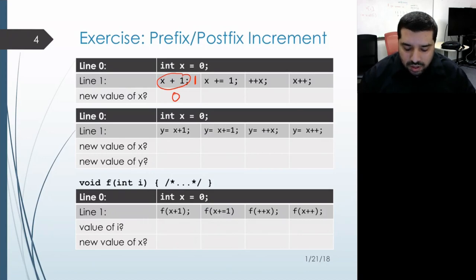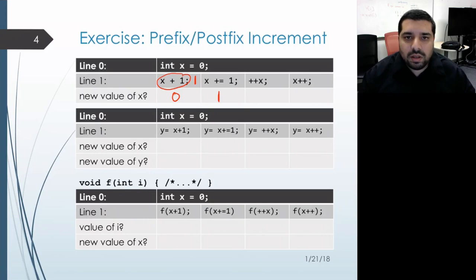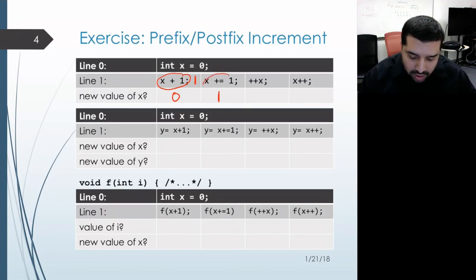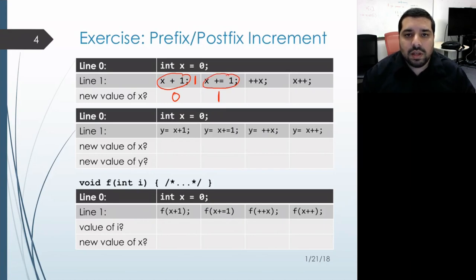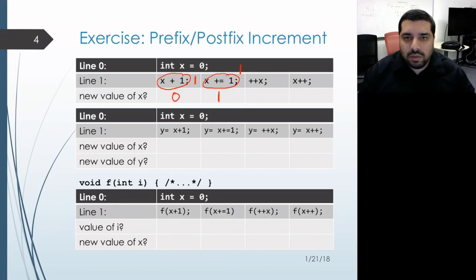Looking at the next one, x plus equals 1 does modify x by incrementing it, so x would have new value 1. The expression as a whole actually evaluates back to the object that was modified — that's the x object whose value is now 1. So if we were to print this out, we would actually get 1 printed out.